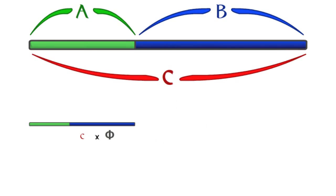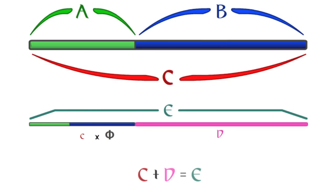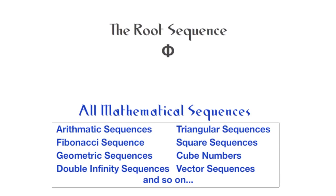If you multiply the length of C with Phi, it will create the exact same image, only bigger. C and D is equal to E. This ratio could then span on forever, going smaller and smaller or bigger and bigger forever. This ratio is infinite. It has no beginning and no end. It is also believed that Phi is the mathematical root of all other sequences.